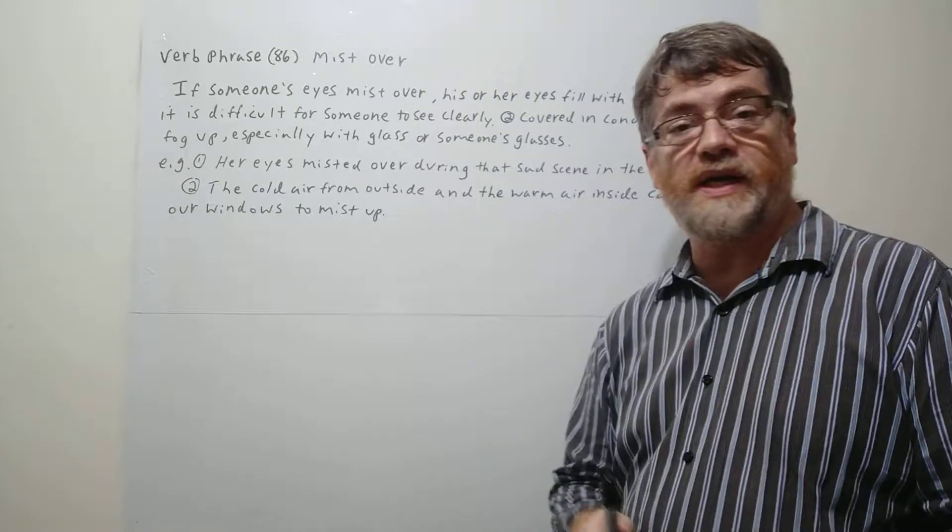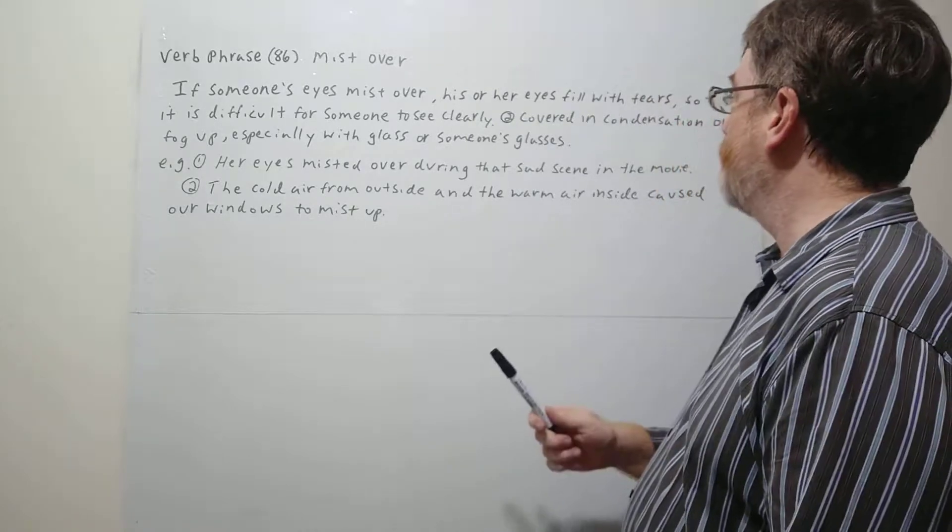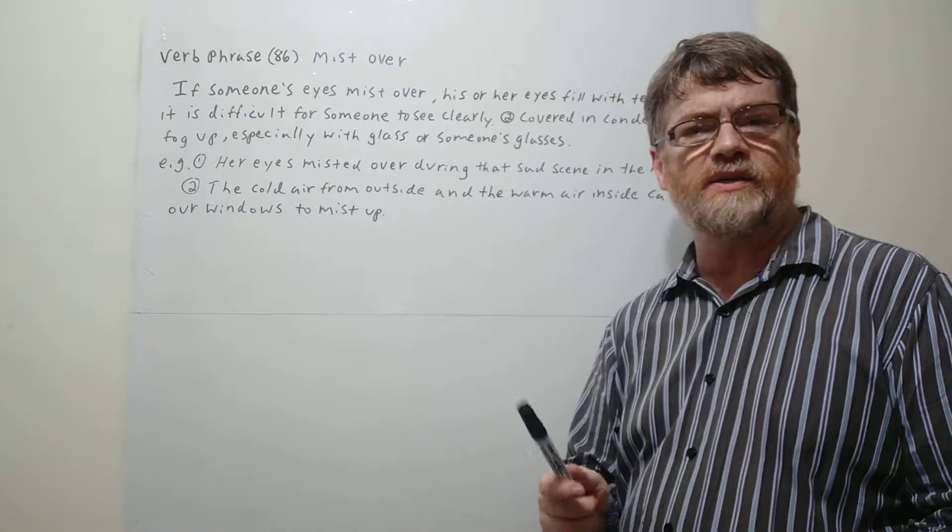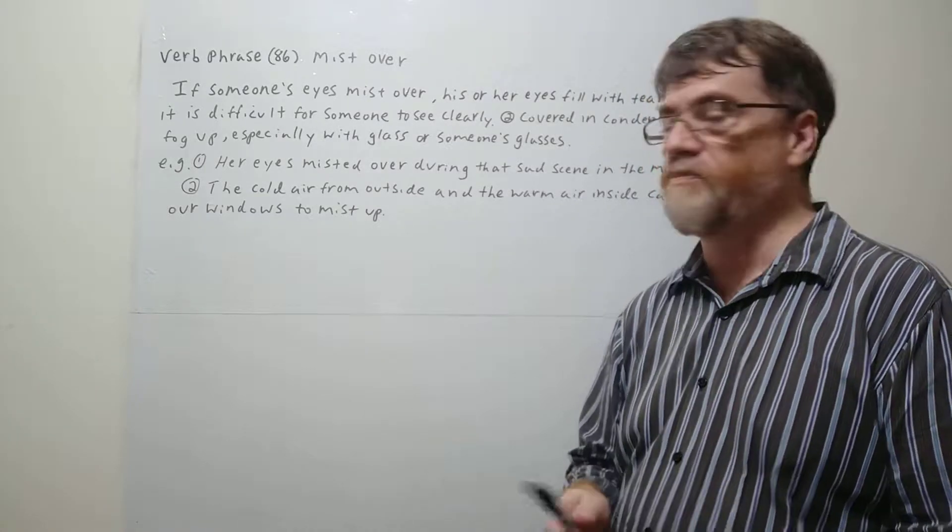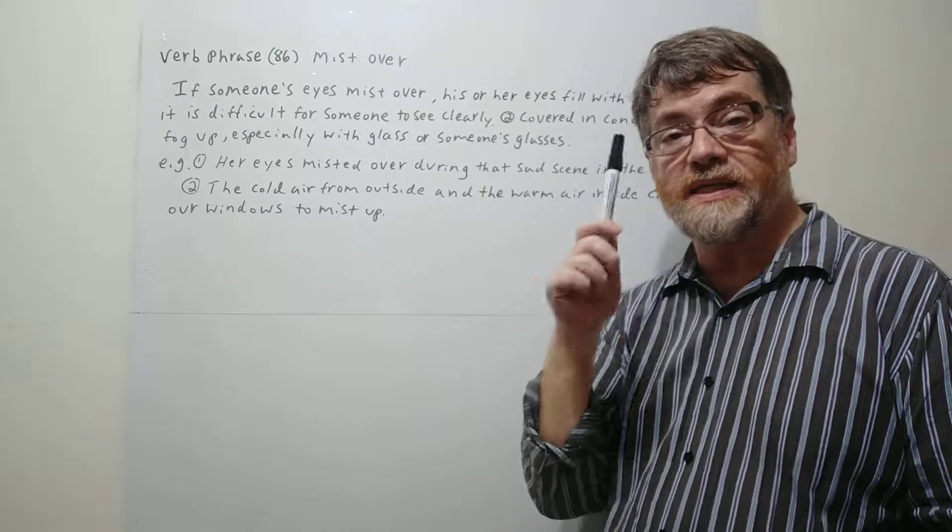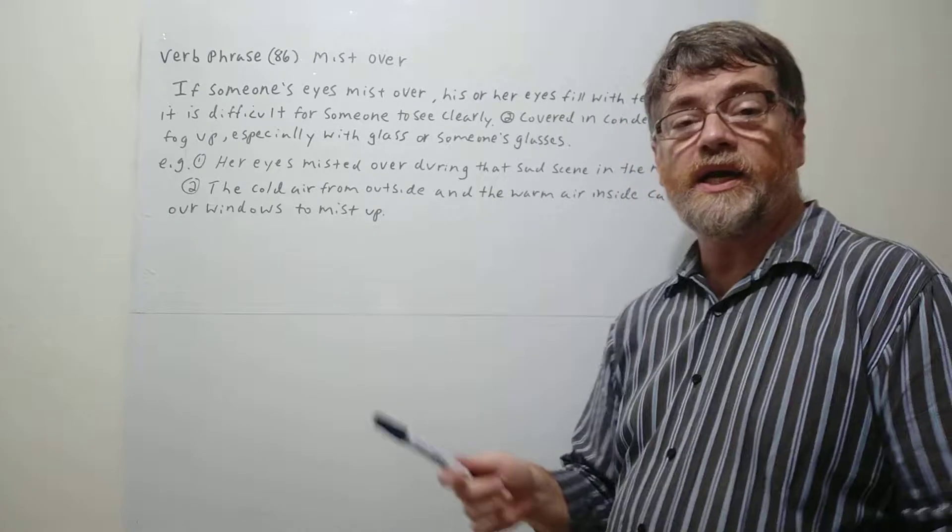Or number two, we have a second meaning here: covered in condensation or fog up. So a lot of times we say mist over, it's kind of like fog up at the same time, especially with glass or someone's glasses like the glasses that you're wearing. All right, good.